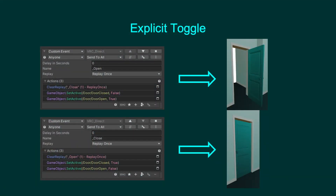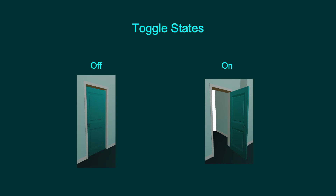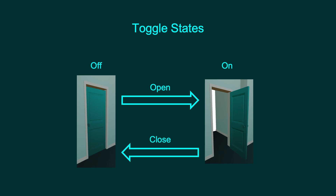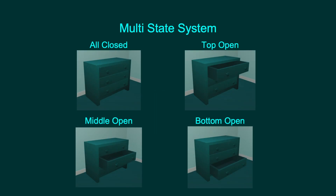You may be thinking that was a lot of steps to do the same thing as the replayParity example. While that may be the case for a toggle, making events do explicit actions is a requirement for even more complex systems. A toggle can be considered as a two-state system — off and on. What if we wanted a system with even more states? For this next example, we have a dresser where only one drawer can be opened at a time. There are four states: all closed, top open, middle open, and bottom open. Hopefully you can use this example to build what you need for your use case.